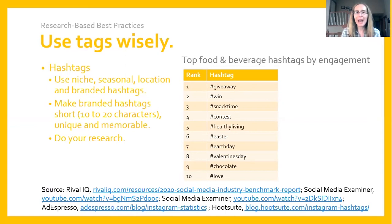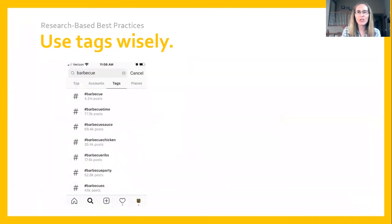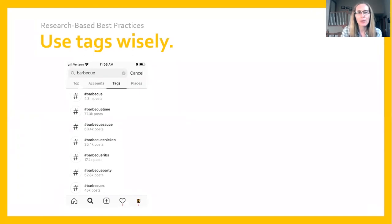When brainstorming hashtags, it's important to do research in advance. One resource is simply your Instagram app. When you open it, you can search and narrow to tags, then include a word related to your post. For example, if you're writing a barbecue post, you search 'barbecue' and the app suggests other hashtags like 'barbecue thyme,' 'barbecue sauce,' 'barbecue chicken,' and 'barbecue ribs.' The barbecue hashtag was used 4.3 million times, barbecue chicken 35,000 times, and barbecue ribs 17,000 times.